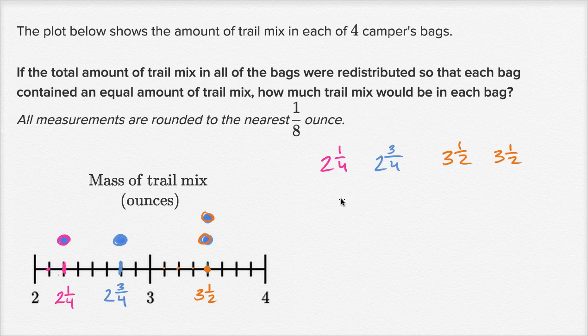What was our strategy? We wanted to redistribute all of the trail mix so that we have the same amount in each bag. One way to imagine this is: everyone pours their trail mix into a big pile, then divides that pile into four, and puts exactly one fourth of the total in each bag. Then it's redistributed so that each bag has the same amount. So let's add it all together and create our pile.